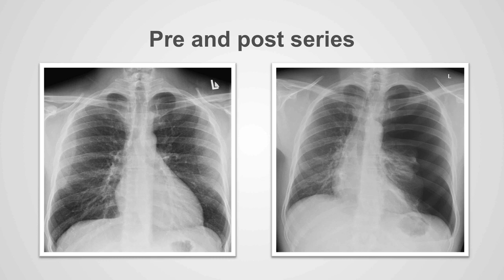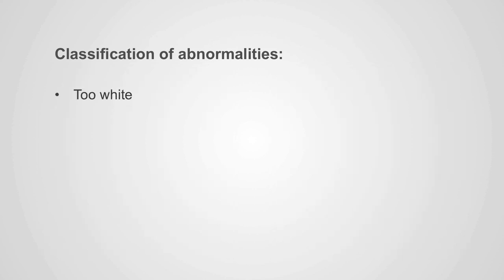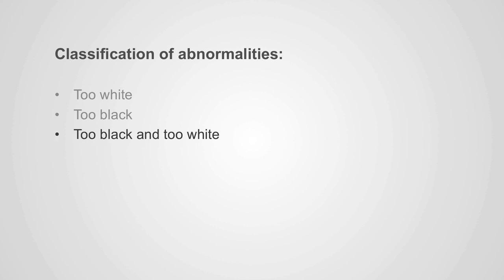In this case, we see that it is too black within this hemithorax compared to the normal x-ray. The reason for that is because the patient has a pneumothorax. Because the heart and mediastinal structures are shifted to the right, this is classified as a tension pneumothorax. So in recap, the abnormalities within the thorax can be classified as too white or too black. The pathology can also be both too black and too white, and that will be explained in a future video.